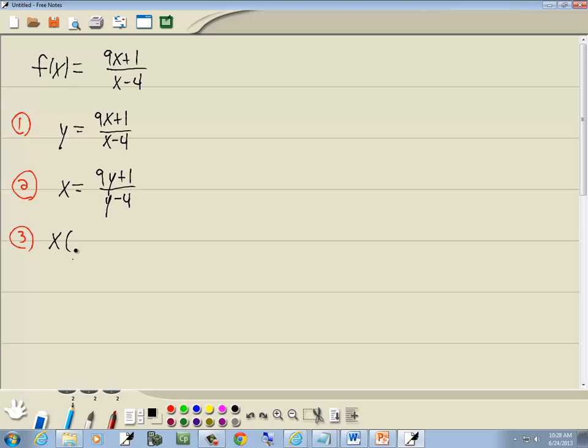So we'll multiply the x by it, and we'll multiply the fraction on the right side by it. Over here, x times y is xy. x times negative 4 is negative 4x. Over on the right side, the y minus 4 is going to cancel, and we're left with 9y plus 1.